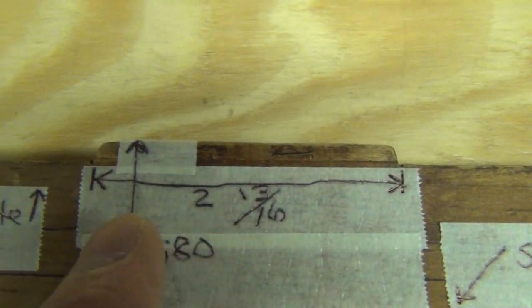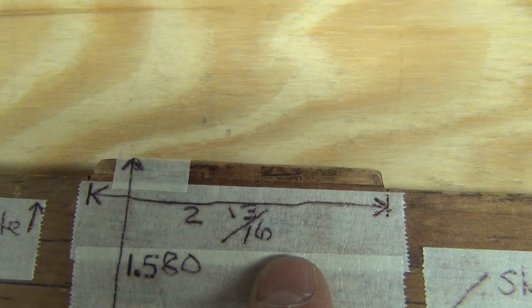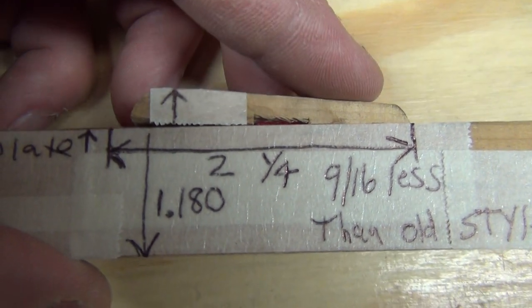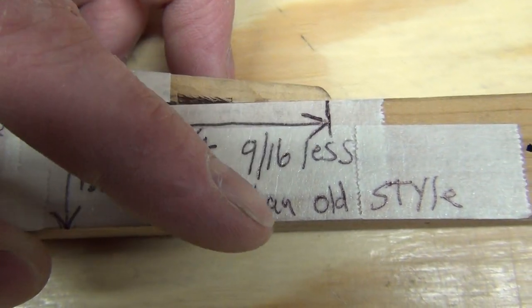Also, if you look, the button on the old key is 2 and 13 sixteenths long. The button on the new key is 2 and 1 quarter inches long. That's 9 sixteenths less than the old style.